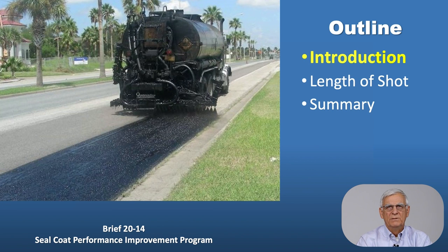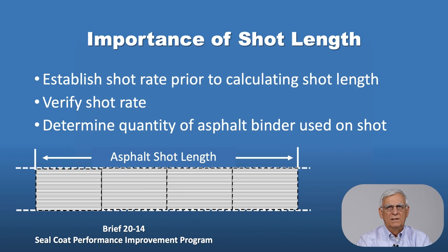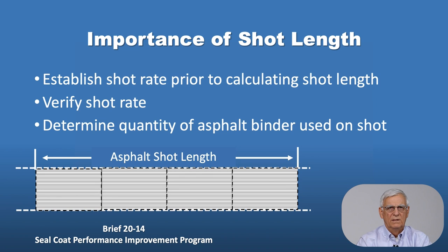I'll briefly introduce the subject before Dennis takes over and completes the program. Shot lengths, as I mentioned, are a very important part of maintaining quality control on a seal coat project. You must first establish the shot rate prior to calculating the shot length itself. We need to verify the shot rate, and we can do that by knowing the shot length and determining where the distributor stops or starts relative to that shot length. We can also determine the quantity of asphalt delivered to the roadway using information derived from the shot length.